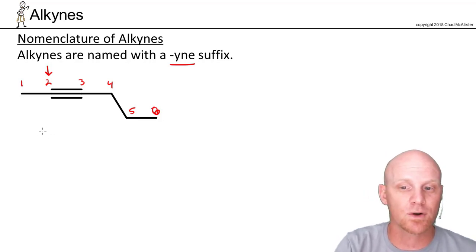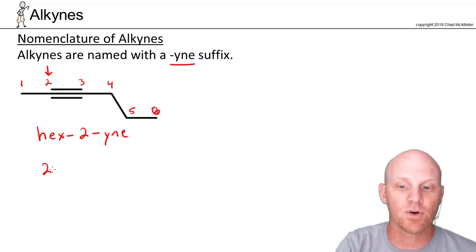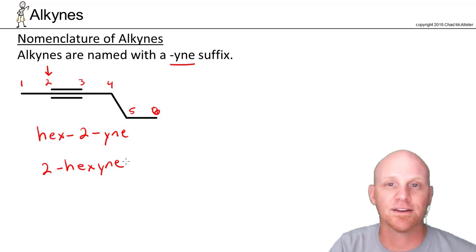With the chain locator, we've got two places we can put it. We can say hex-2-yne, so right before the suffix -yne we can put the chain locator there, and that's kind of proper. But also accepted is putting it right before the parent chain itself, so we could say 2-hexyne instead.